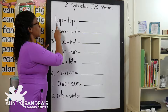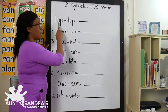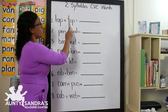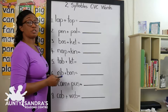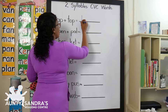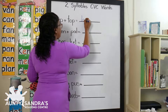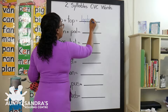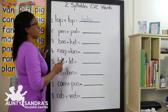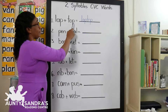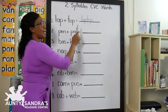So the first syllable is Lap, L-A-P. And the next syllable is T-O-P, Top. So we are going to join the two syllables together to make it into one word. So it is L-A-P, Lap, T-O-P. So the word is now laptop. We join lap and top together and we get laptop.